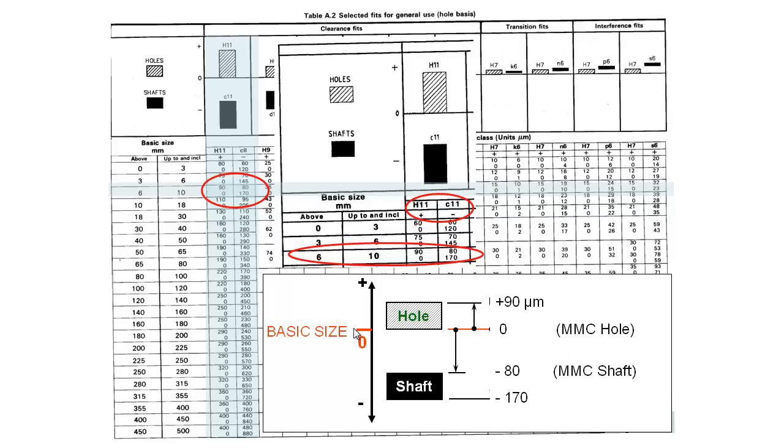So if we transfer those numbers down it looks something like this. So again this is our basic size or our basis size of 8 millimeters, so it can be exactly on 8 millimeters for the hole or it can be slightly bigger by 90 microns for the shaft. For this fit it actually needs to be a bit under 8 millimeters at its biggest, so 8 millimeters minus 80 microns, and it can be smaller down to 8 millimeters minus 170 microns.